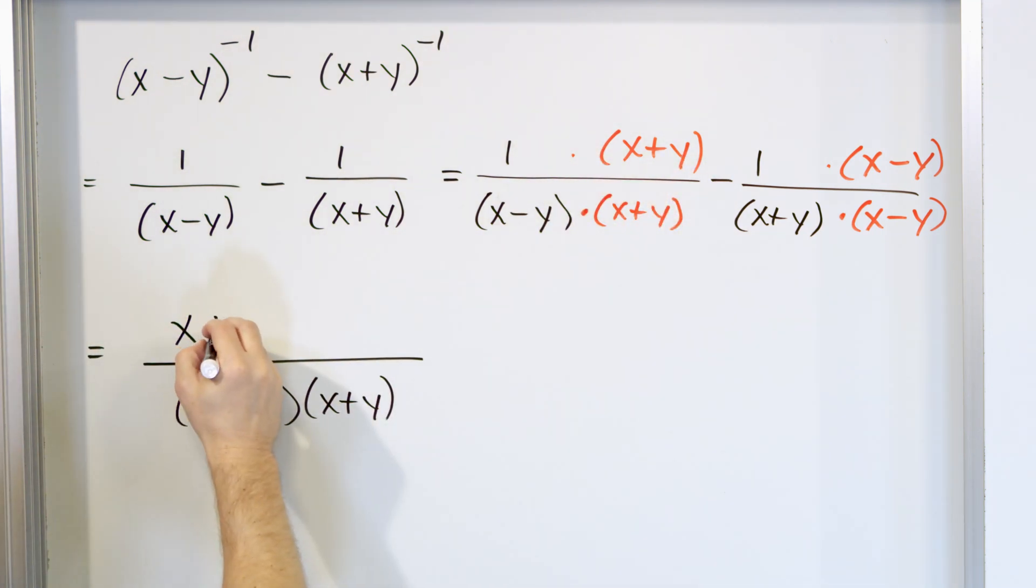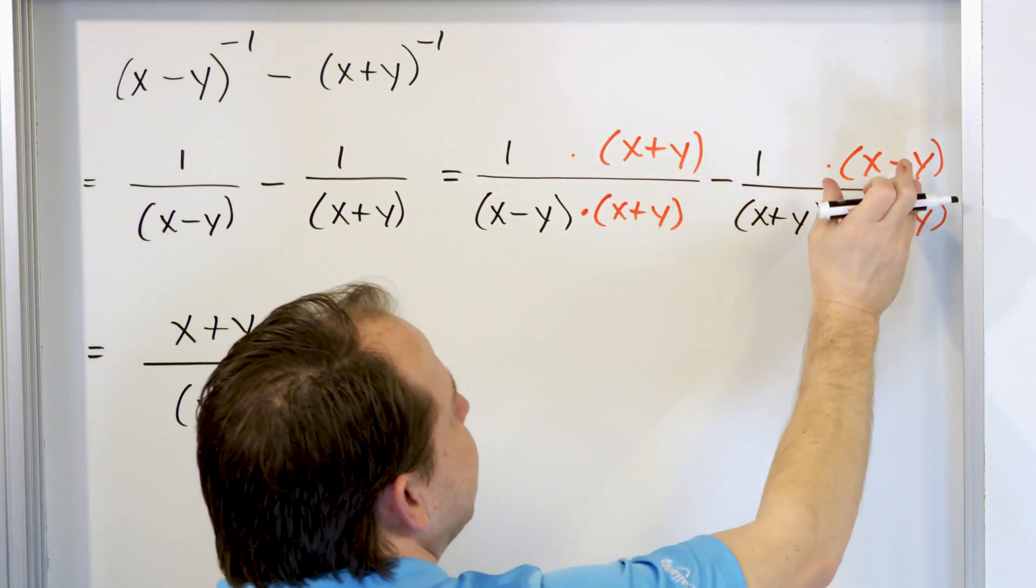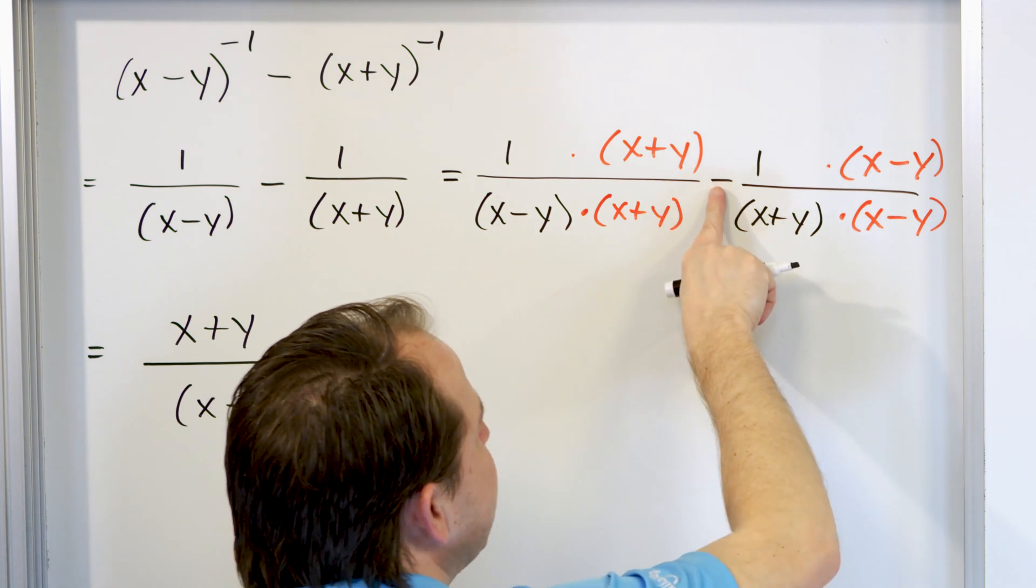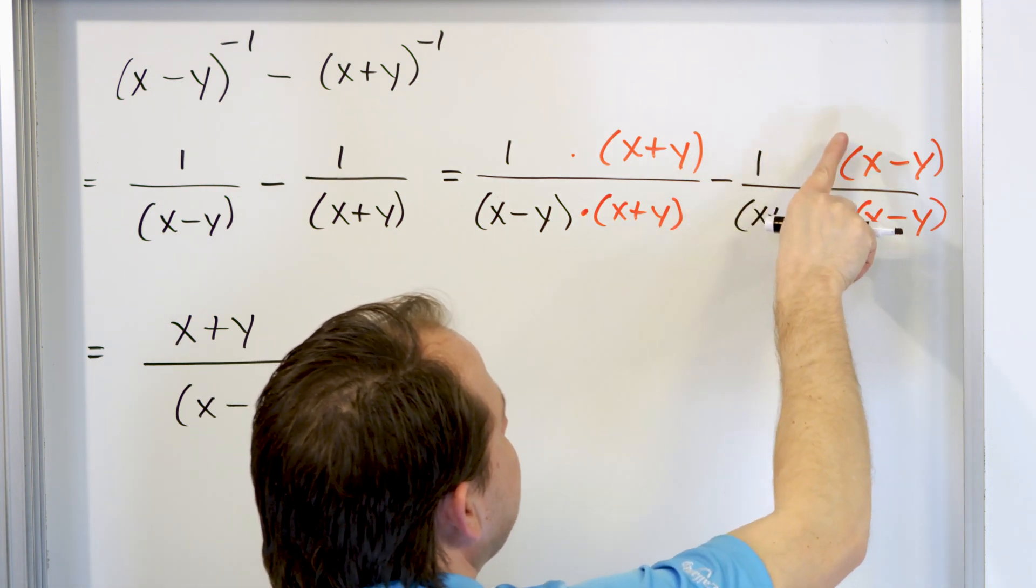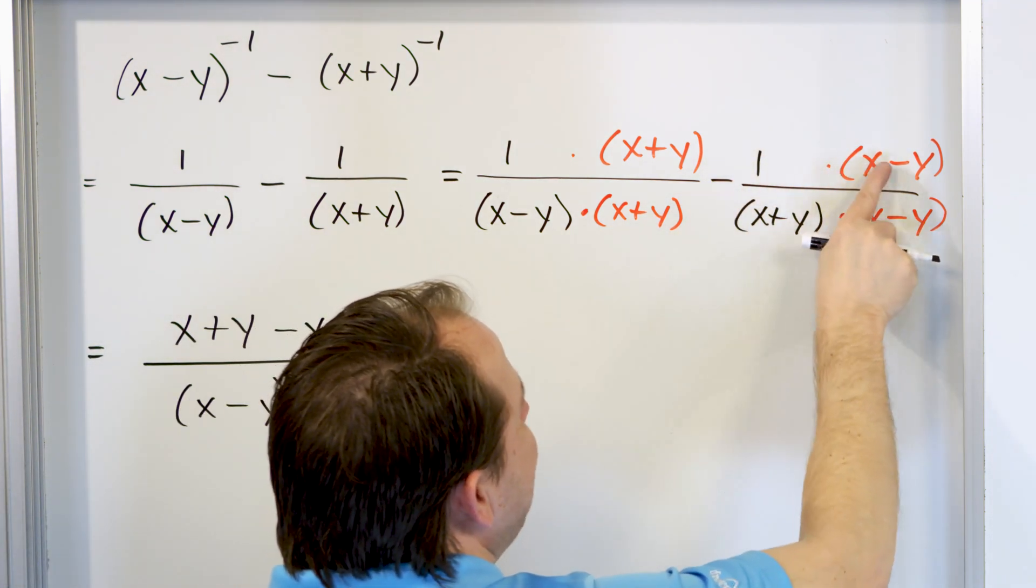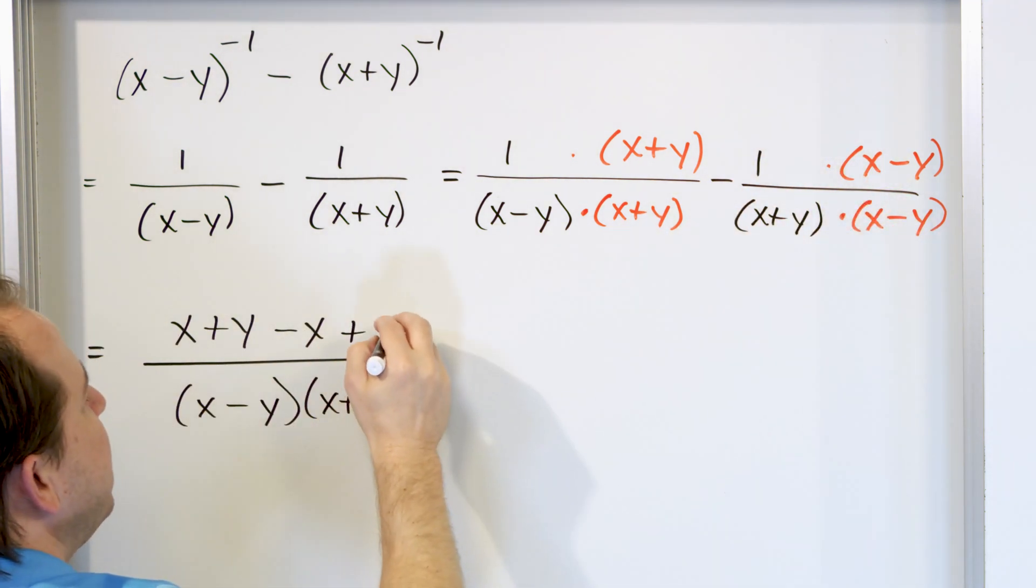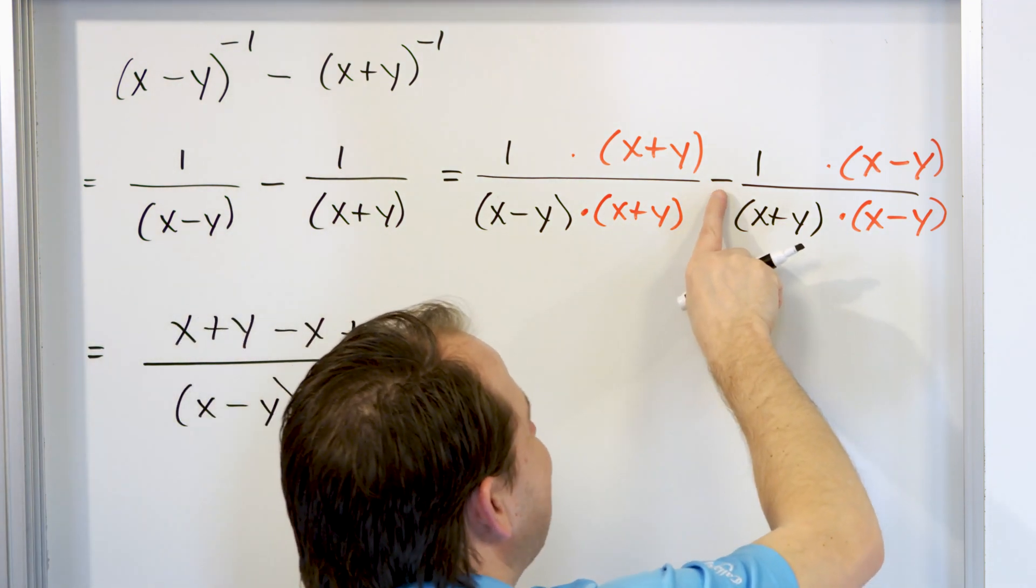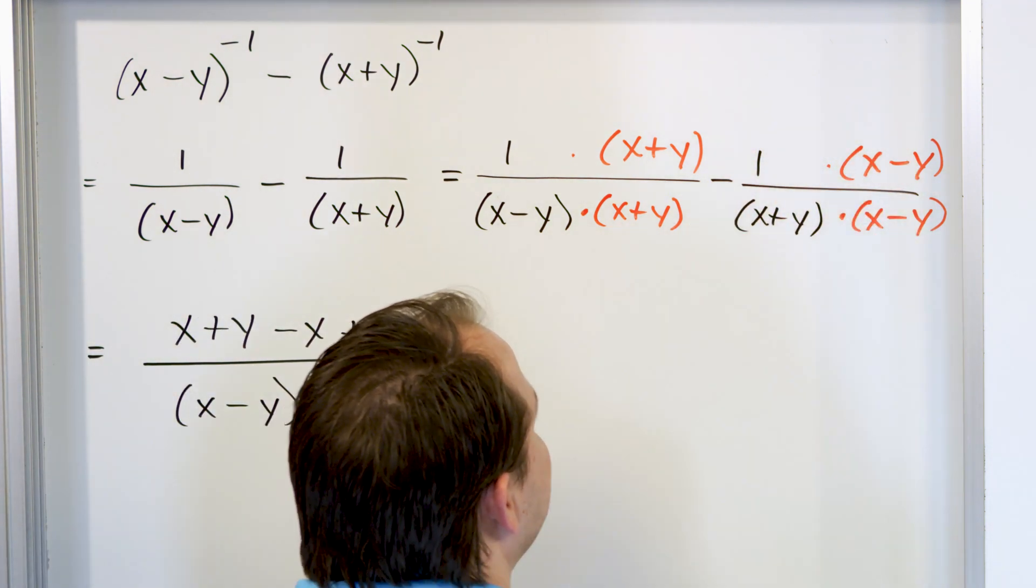Then we minus this guy. But this negative gets distributed in. It's like an invisible negative one going into the x making it negative x, and this going into the negative y making it positive y. So plus y. So you have to be very careful when you're subtracting to distribute that guy in to whatever's on the top.